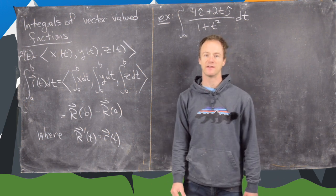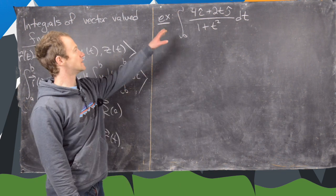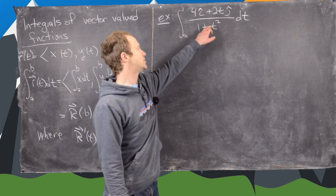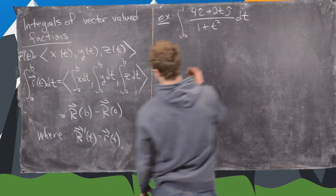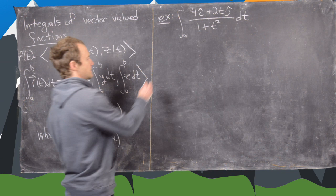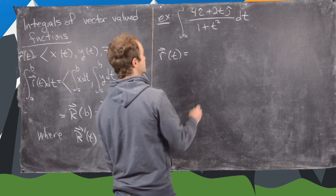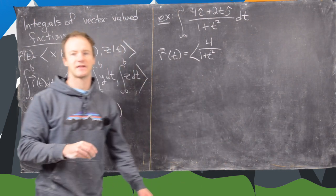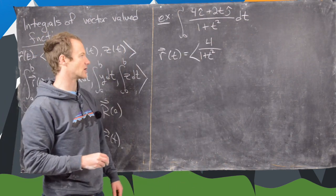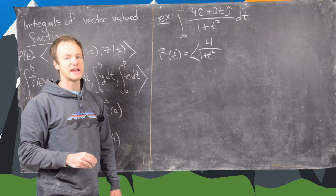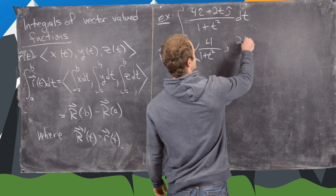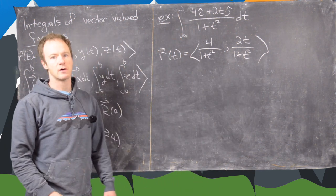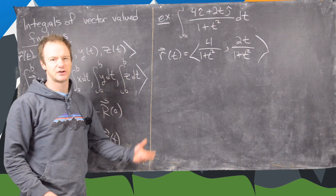That's really all there is to it. I'm not going to prove any of these, but I will do a nice example. So we've got the integral from 0 to 1 of the vector-valued function 4i plus 2tj over 1 plus t squared. Let's rewrite this. Here r of t equals 4 over 1 plus t squared in the i-th component — notice the denominator is really just a scalar associated with each component — and then the second component is 2t over 1 plus t squared. It looks like we just have two components, so it's in two dimensions.